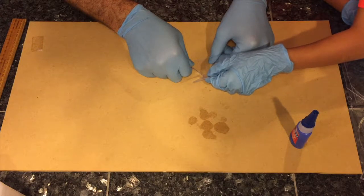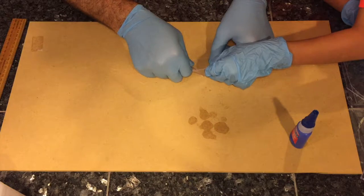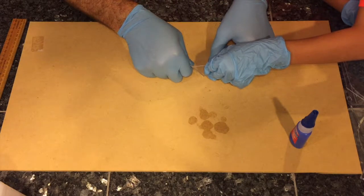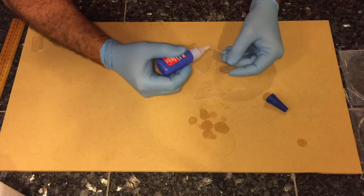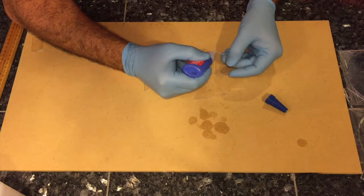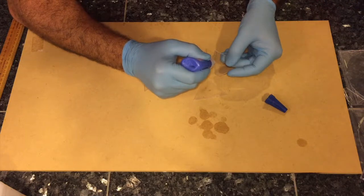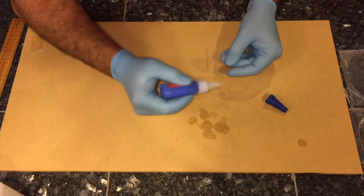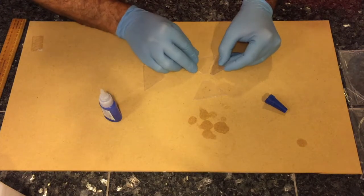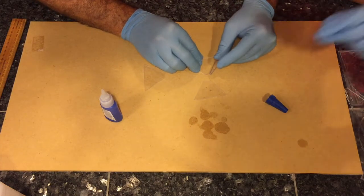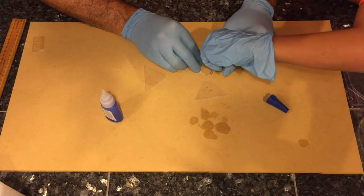Lean it over towards me so that all the edges are touching. There we go, there's our pyramid. The first edge we'll glue up is this one. Here, can you hold this for me? Hold this one on there.